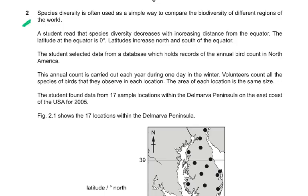Now let's read through question number 2. Species diversity is often used as a simple way to compare the biodiversity of different regions of the world. A student read that species diversity decreases with increasing distance from the equator.